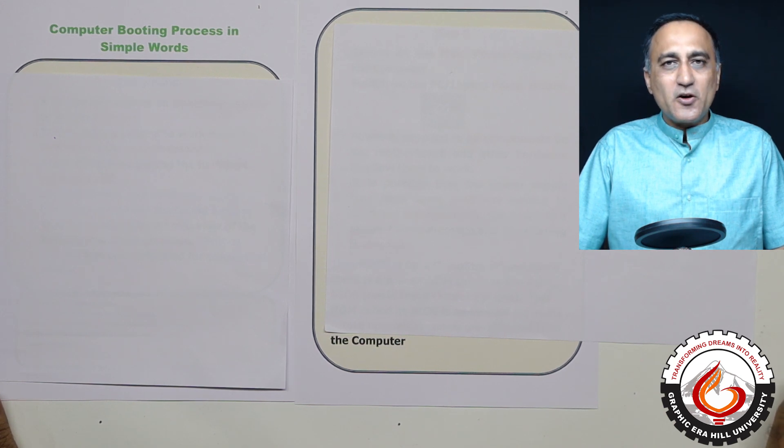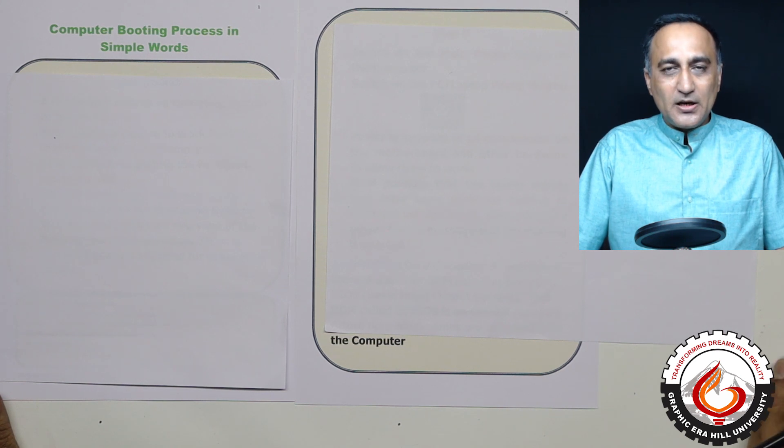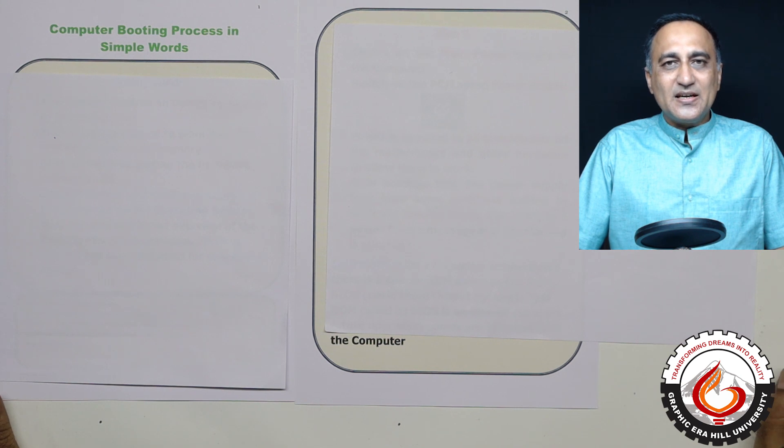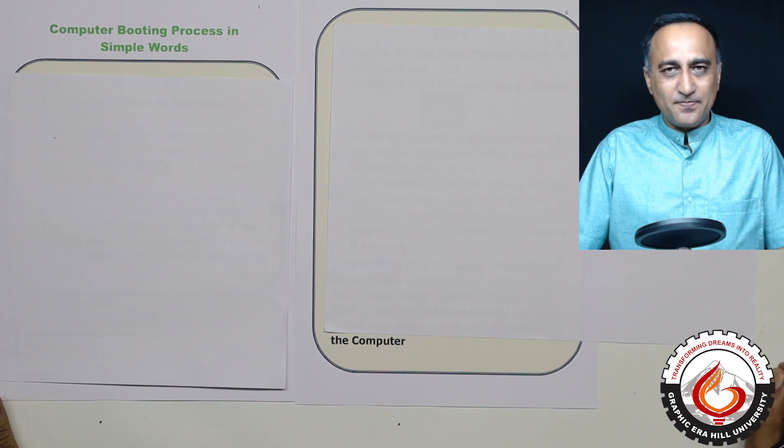When the computer is already on and you are using it, the operating system is in complete control of the hardware and you are able to get things done. But as you are aware, the operating system resides in the main memory called as the RAM. But since the power is switched off at that point, RAM does not contain the operating system. So when you start the power supply of the computer, the operating system is not in control of your PC.